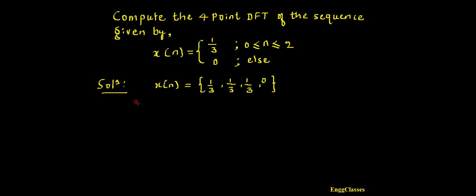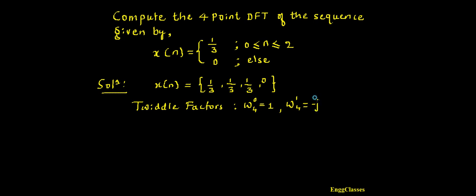Before finding the DFT I must know the twiddle factors. For 4-point DFT: W4 to the power 0 is equal to 1, W4 to the power 1 is equal to minus j, W4 to the power 2 is equal to minus 1, and W4 to the power 3 is equal to plus j. If I know these twiddle factors I can find the DFT of this sequence quite easily.